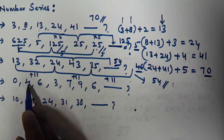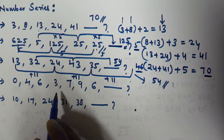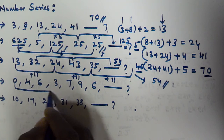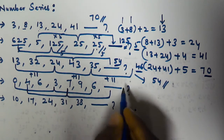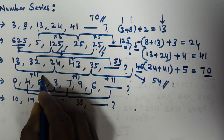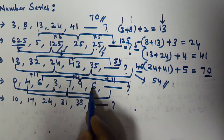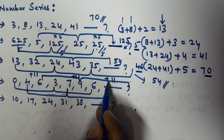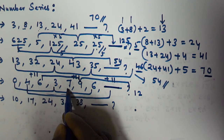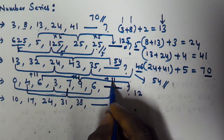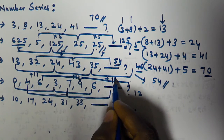The next problem is: 0, 4, 6, 3, 7, 9, 6. There are three interleaved series here. First series: 0, 3, 6 — adding 3 each time. Second series: 4, 7 — adding 3, so 4 plus 3 is 7, and 7 plus 3 is 10. Third series: 6, 9 — adding 3, so 6 plus 3 is 9, and 9 plus 3 is 12. We need the next number from the second series, which is 7 plus 3.